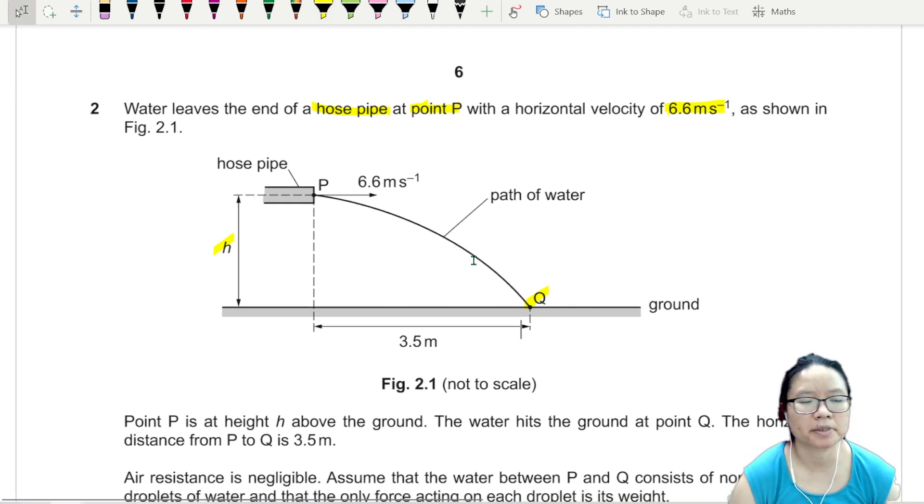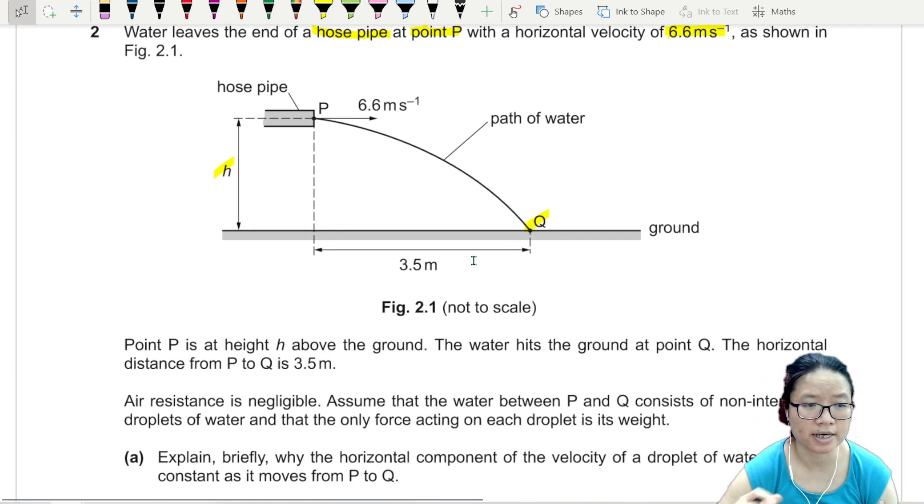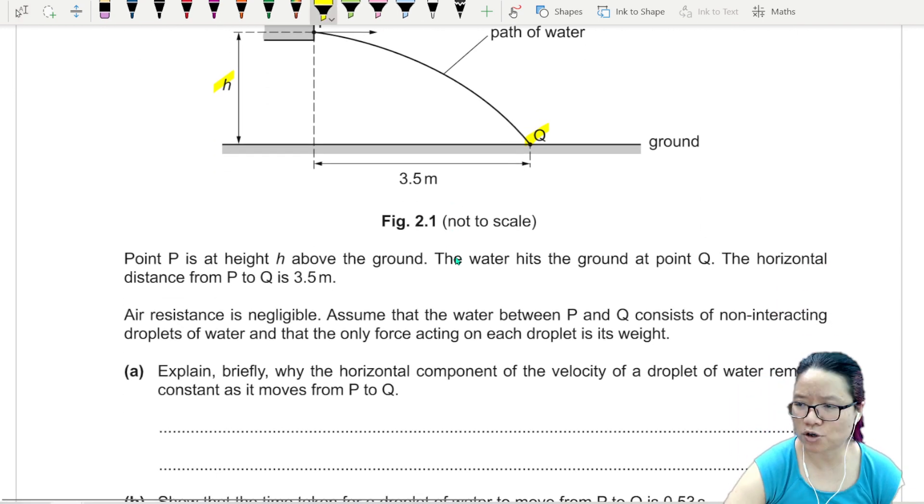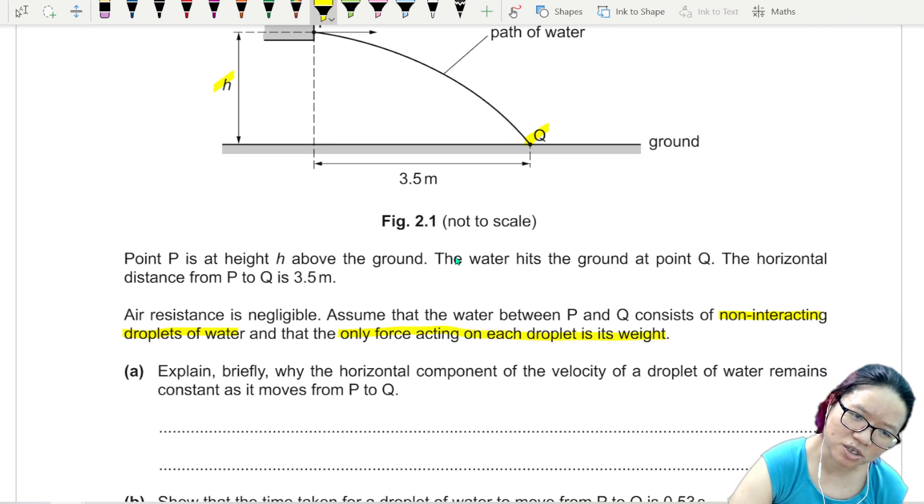No air resistance. Assume the water between P and Q consists of non-interacting droplets of water and the only force acting on each droplet is its weight.